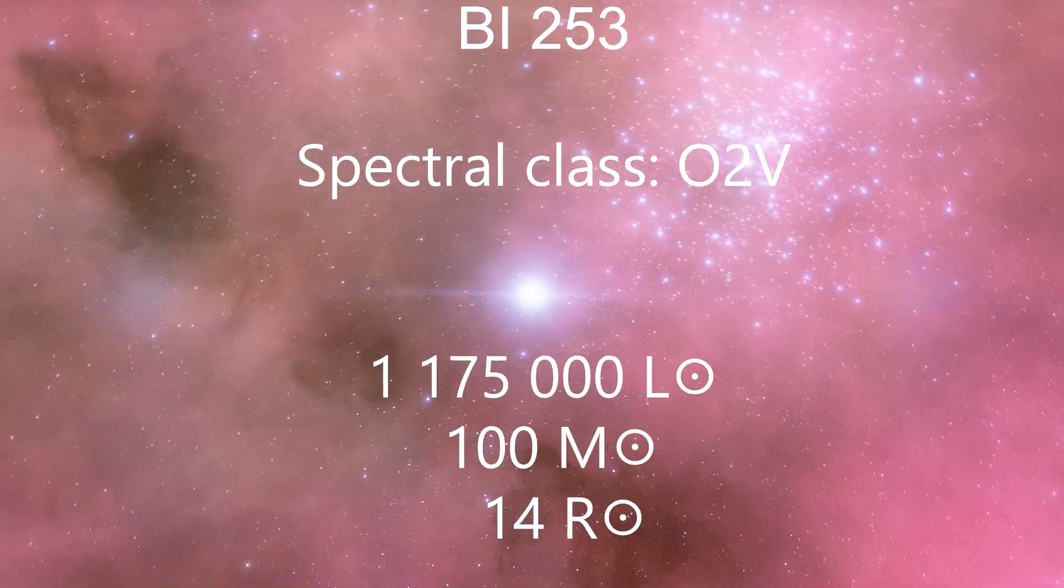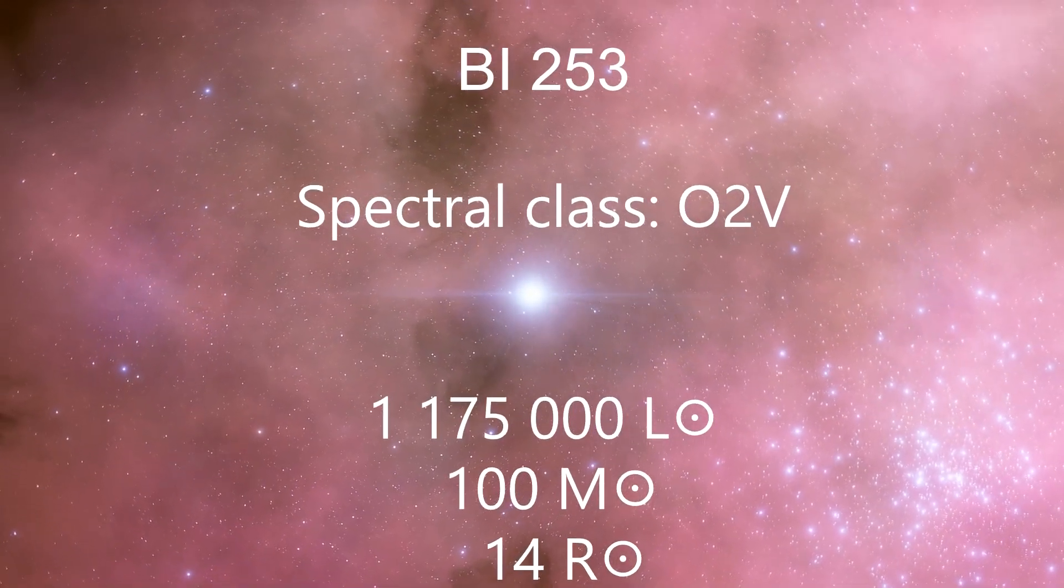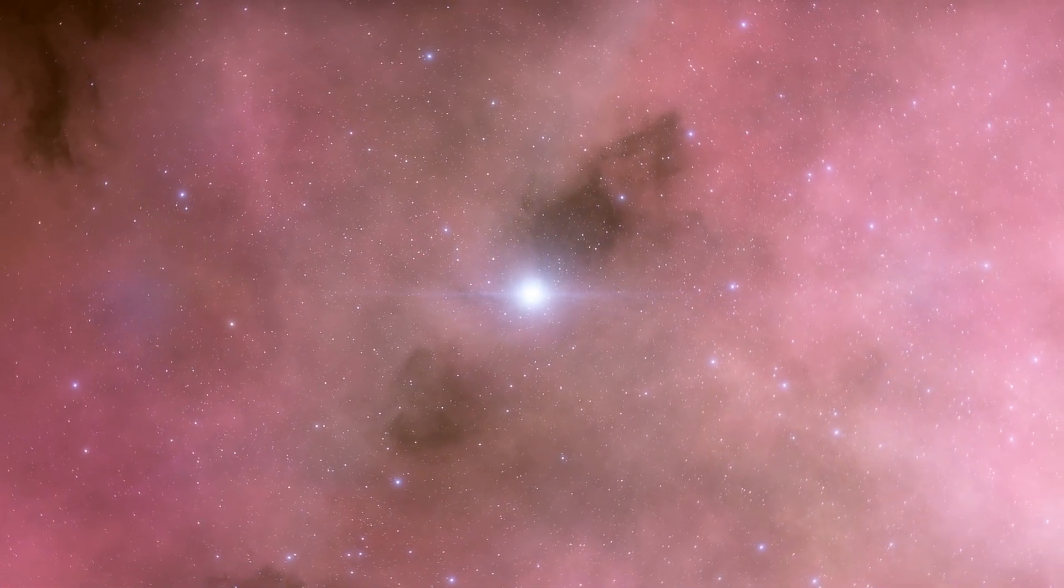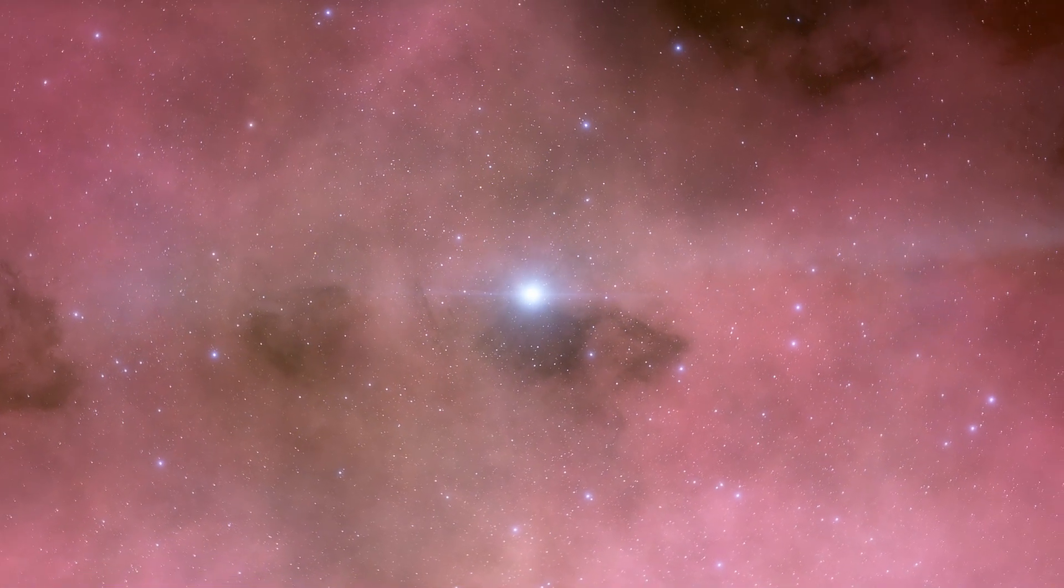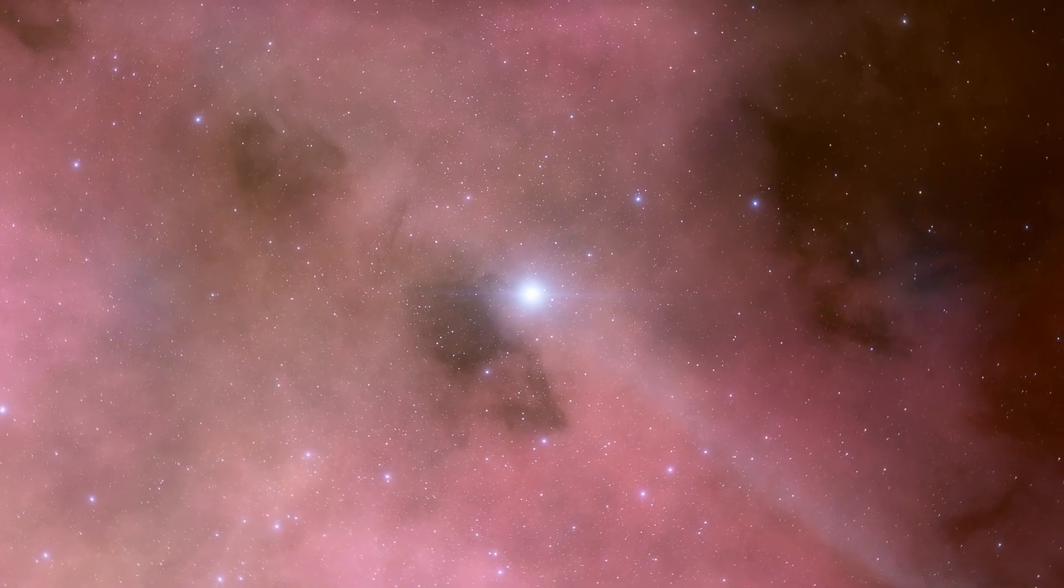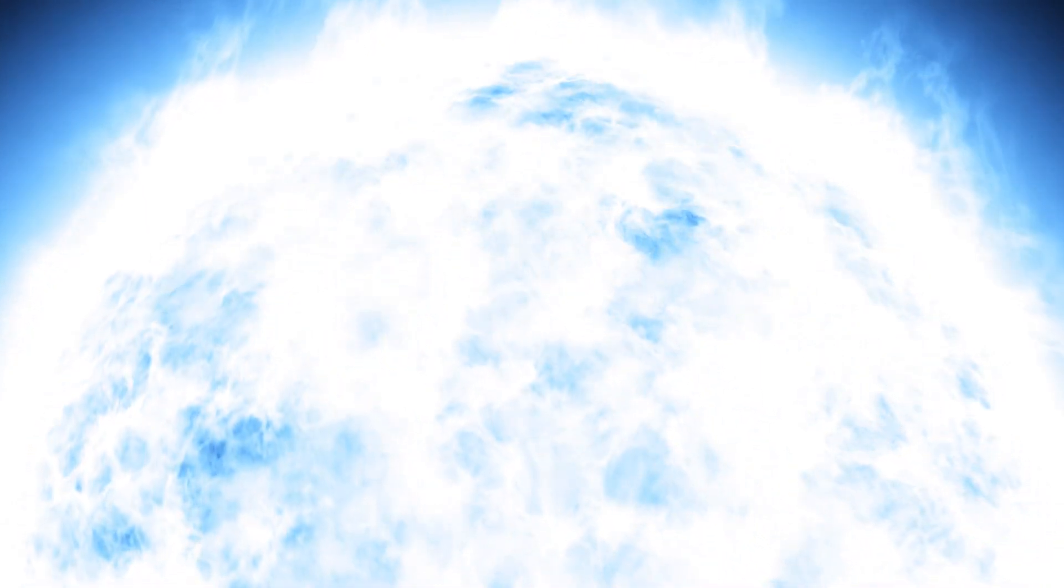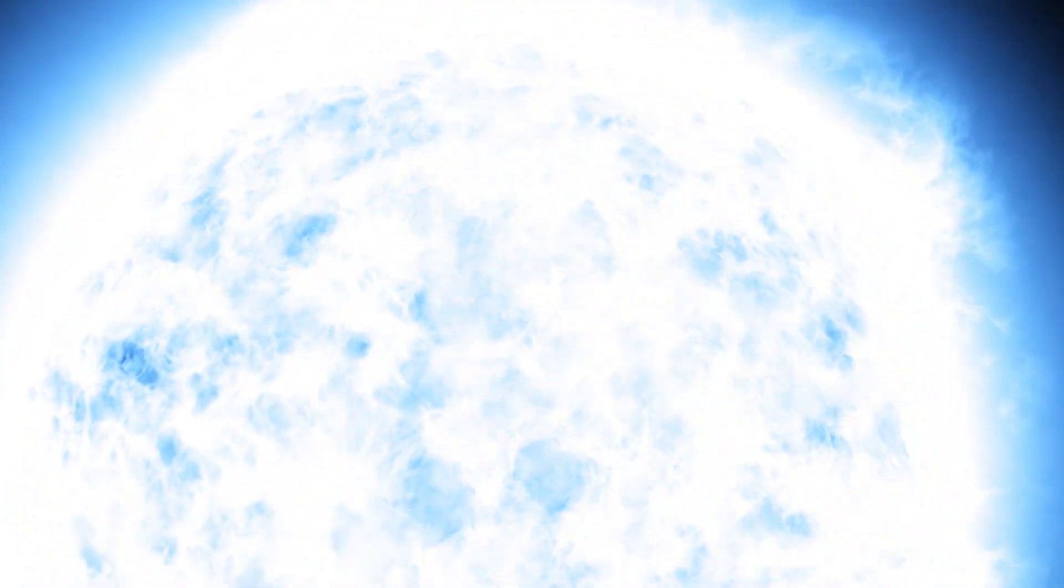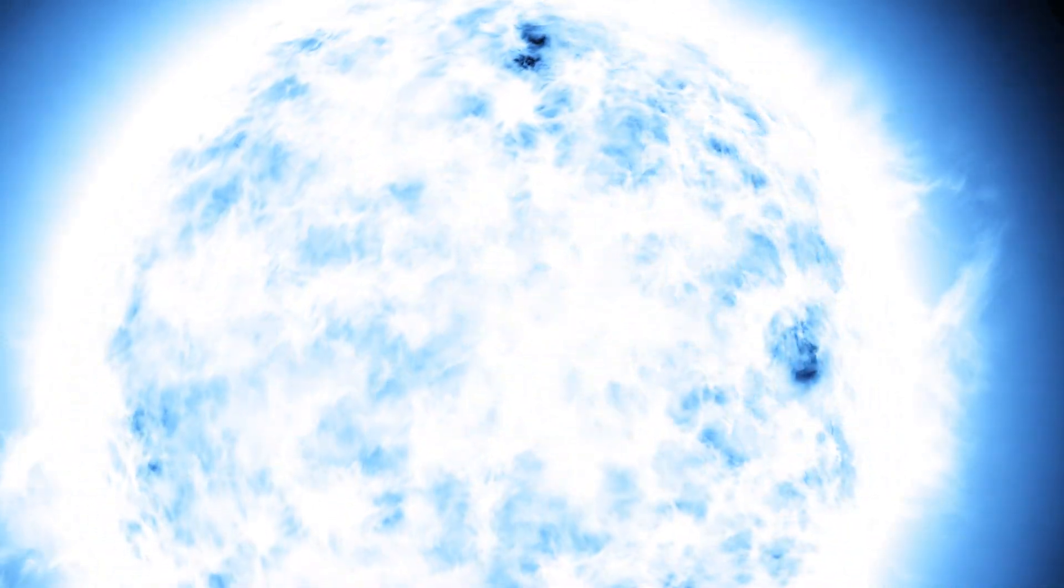And finally, let's go to the amazing star BI-253 of spectral class O2V in the Large Magellanic Cloud. With a mass of about 100 solar masses, a radius of 14 solar radii and a luminosity of 1,175,000 solar luminosities. With a surface temperature of 54,000 Kelvin, it is one of the hottest known main sequence stars and one of the most massive and brightest among known stars.